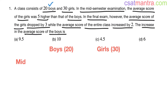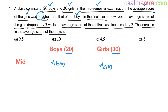We have a class consisting of 20 boys and 30 girls. In the mid-semester examination, the average score of the girls was 5 higher than that of the boys. Let's denote the average score of the boys in mid-semester as ABM and the average score of the girls in mid-semester as AGM. So AGM equals ABM plus 5.